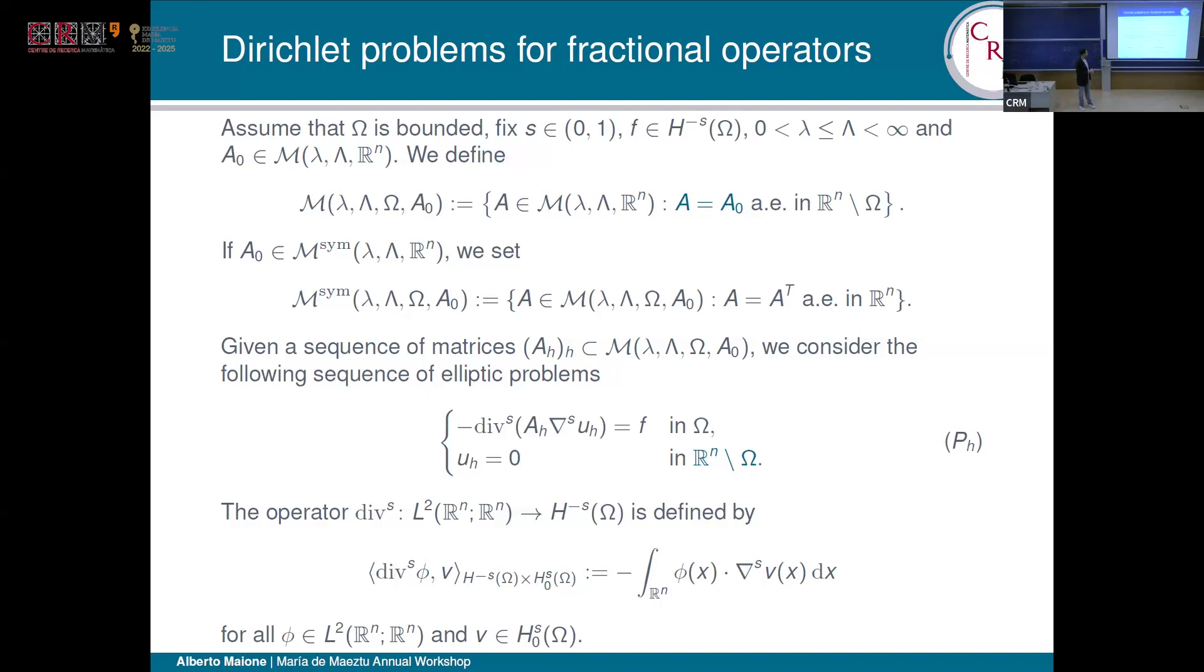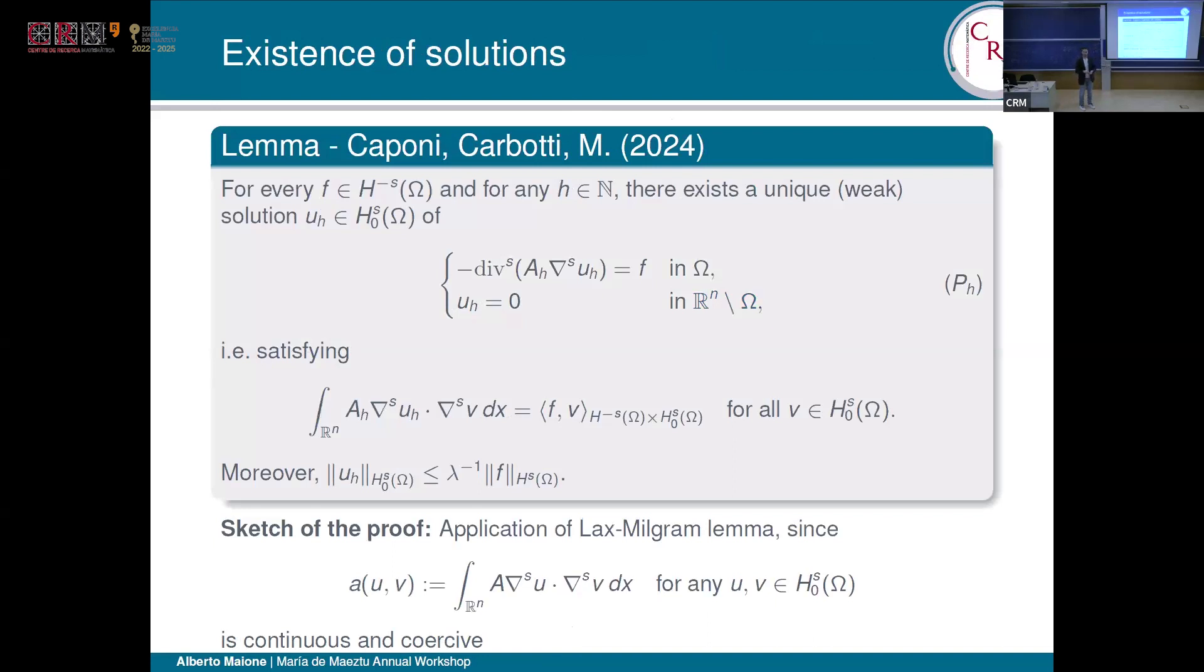The first question is, do these problems admit a solution? Is it unique? Can we give some bounds for the solution? The answer is positive. For any H, so for any problem, we can find exactly one weak solution in the sense that this equality holds, and we also have standard bounds like in the local case. Like in the local case, once we have all the construction of the second part of the presentation, it is just an application of Lax-Milgram lemma or Ritz-Fréchet in the symmetric case.